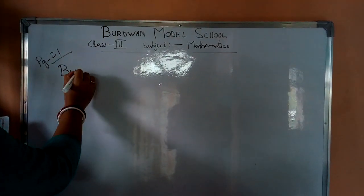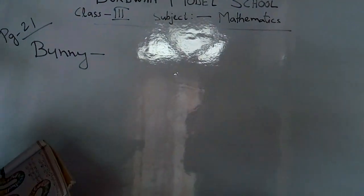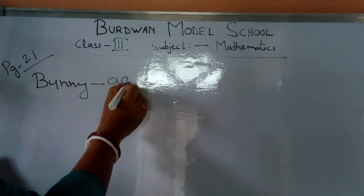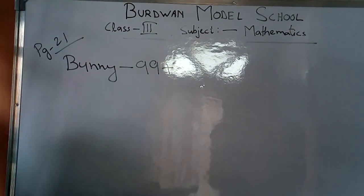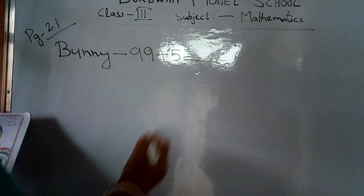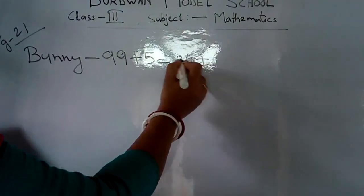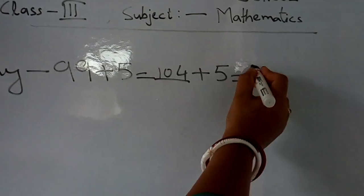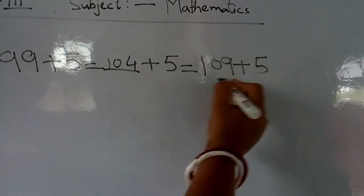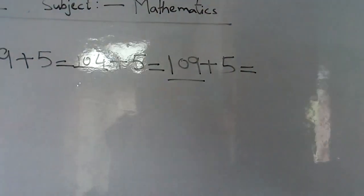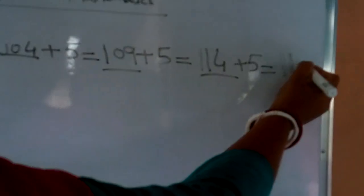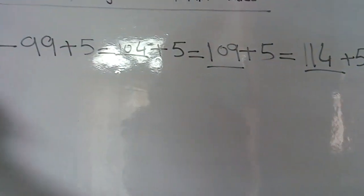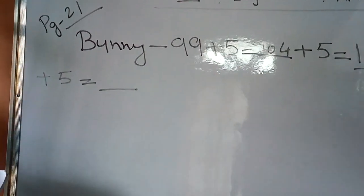Let's start writing for Bani. Bani is starting from 99. He will start from 99 plus — in how many boxes is he jumping? He is jumping on the 5th box, so you will add plus 5. 99 plus 5 equals 104. Then again plus 5 equals 109. Again, 109 plus 5 gives you 114. Then 114 plus 5 gives you 119. Then 119 plus 5 gives you 124.